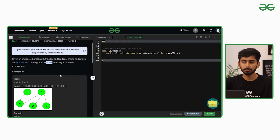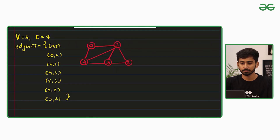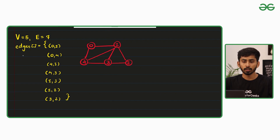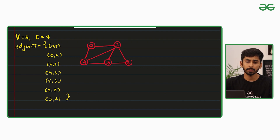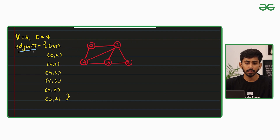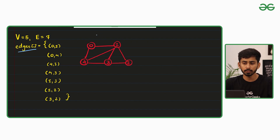Let's understand with the help of the example given. I've taken the same example from the test case. In the input you will be given V number of vertices — here 5 vertices and 7 edges — and an array containing pairs of edges. This edges array contains pairs: 0-1, 0-4, 4-1, 4-3, representing all the edges present inside the graph.